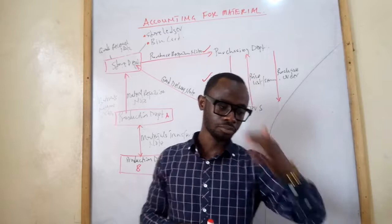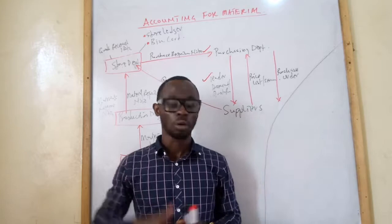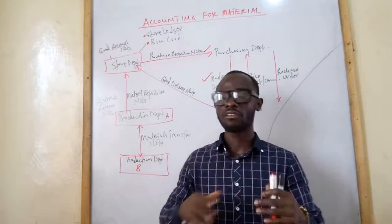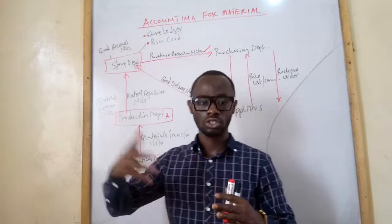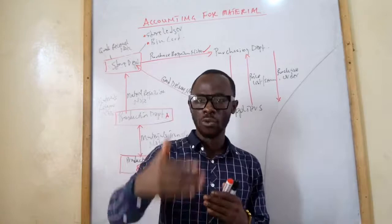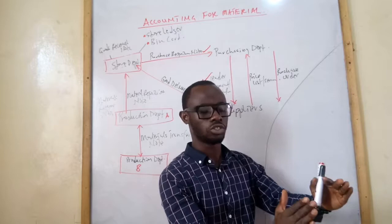Continuous stock taking is the counting and valuing of physical stocks more frequently — daily, weekly or monthly. At the end of each period you calculate how much was sold and how much needs to be brought in. This frequent verification is called continuous stock taking.